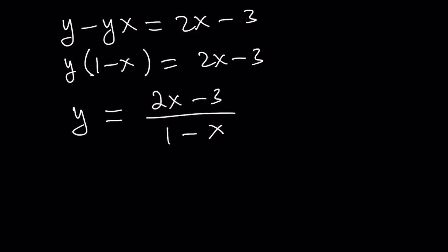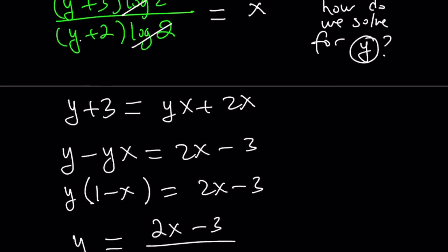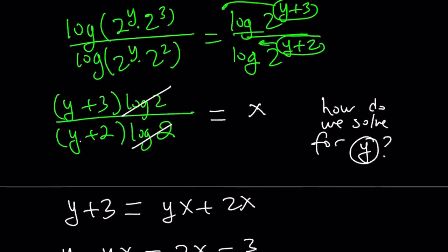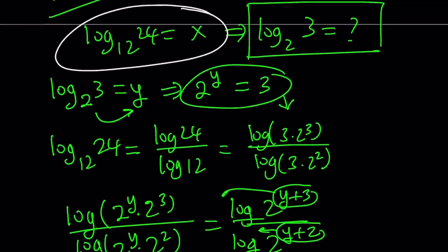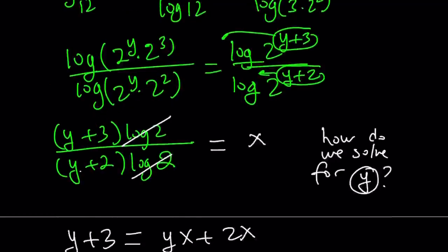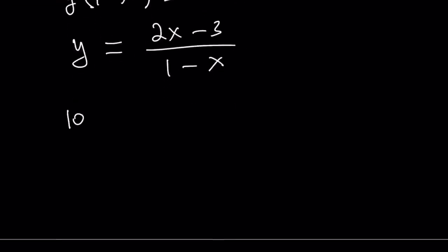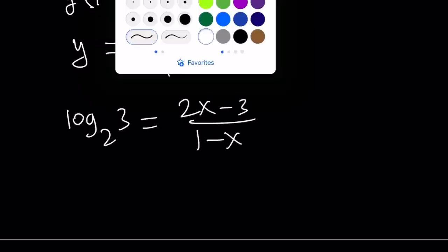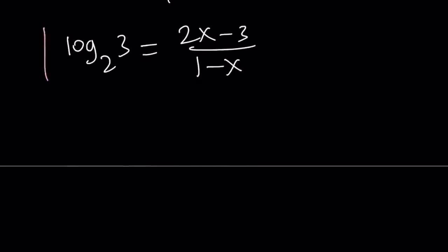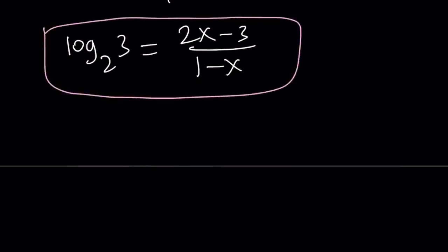Our goal was to solve for y. But what is y? y is what we're trying to find — log 3 with base 2. And we got the answer: log 3 with base 2 is equal to 2x minus 3 divided by 1 minus x. That's what we were trying to find in terms of x, and this brings us to the end of this video. Thank you for watching, I hope you enjoyed it.